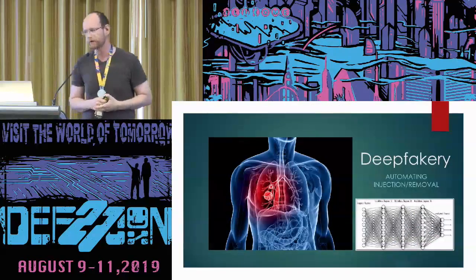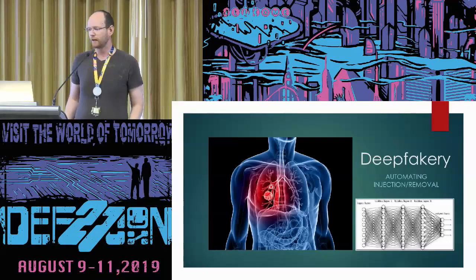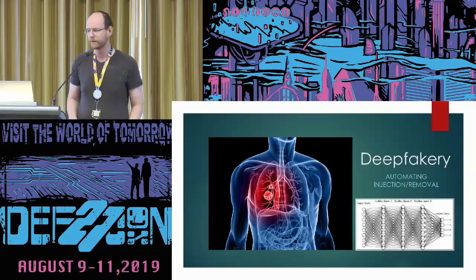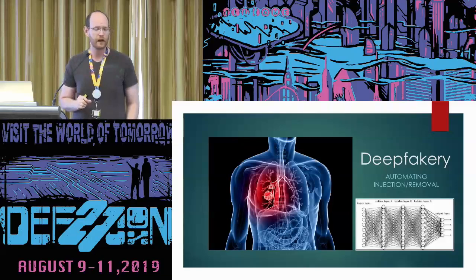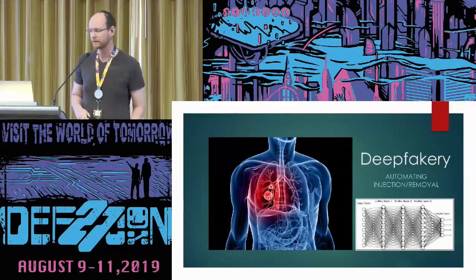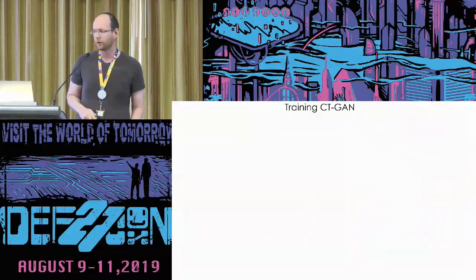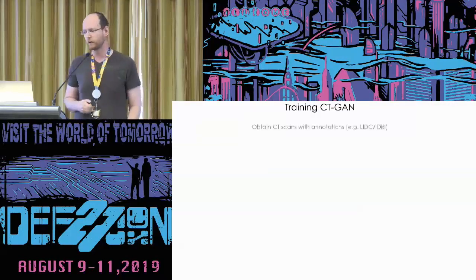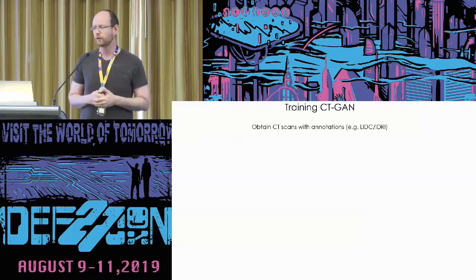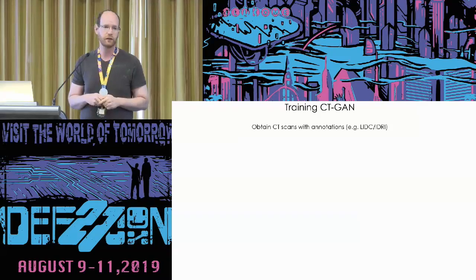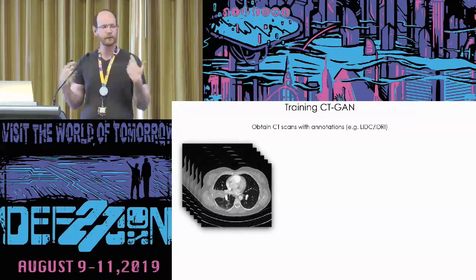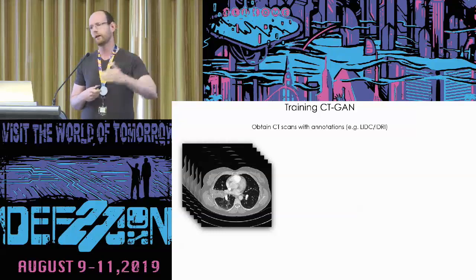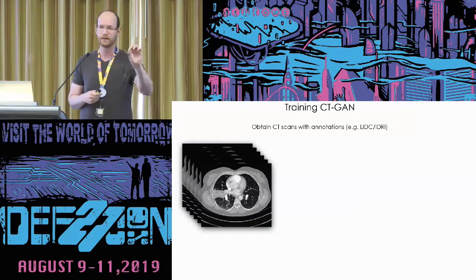Let's get to the interesting part — the deep fakery of it all. How can an attacker automate the process of injecting or removing medical evidence? We're going to focus on lung cancer and how an attacker can inject or remove lung cancer from a CT scan. The first step in training the model is data. We went to free online databases of CT scans, found one with lung cancer annotations, and downloaded it.